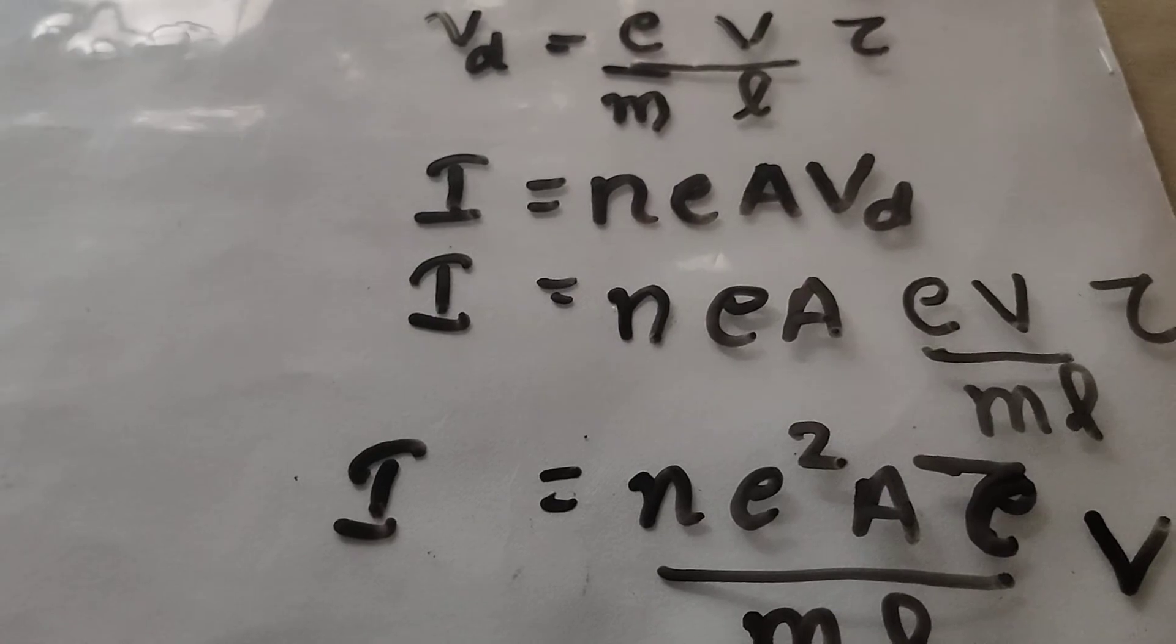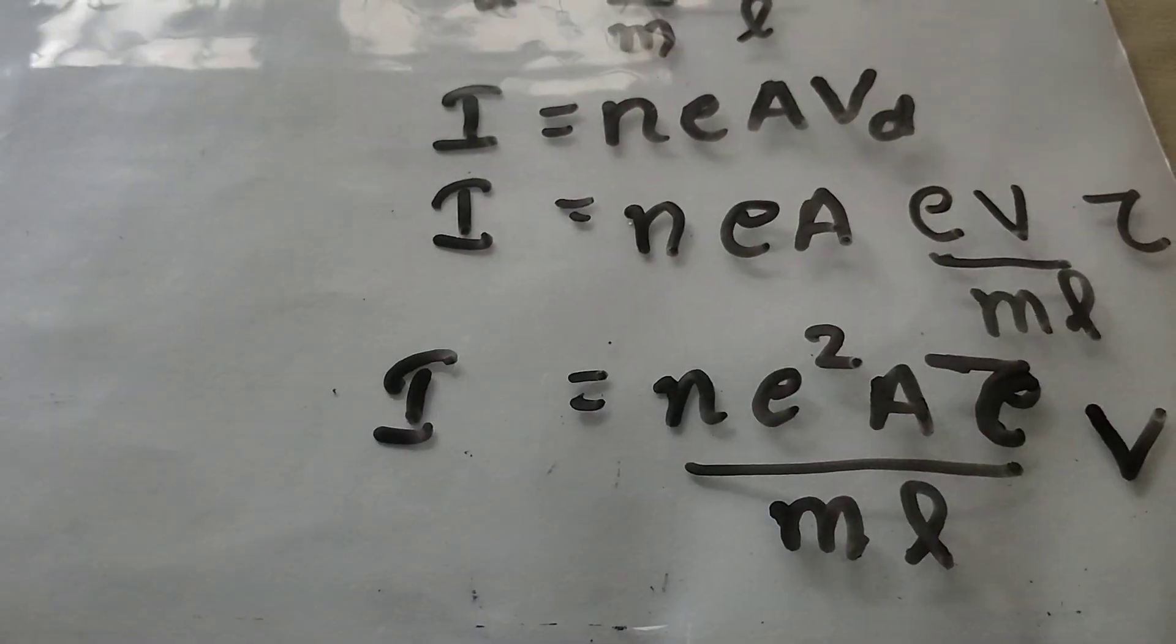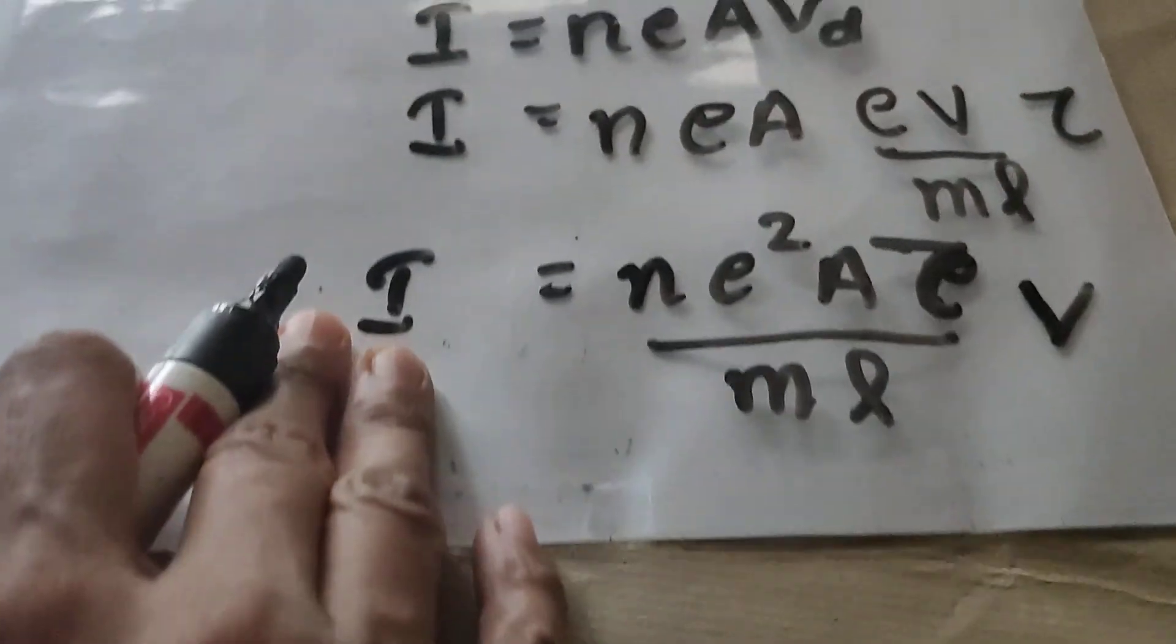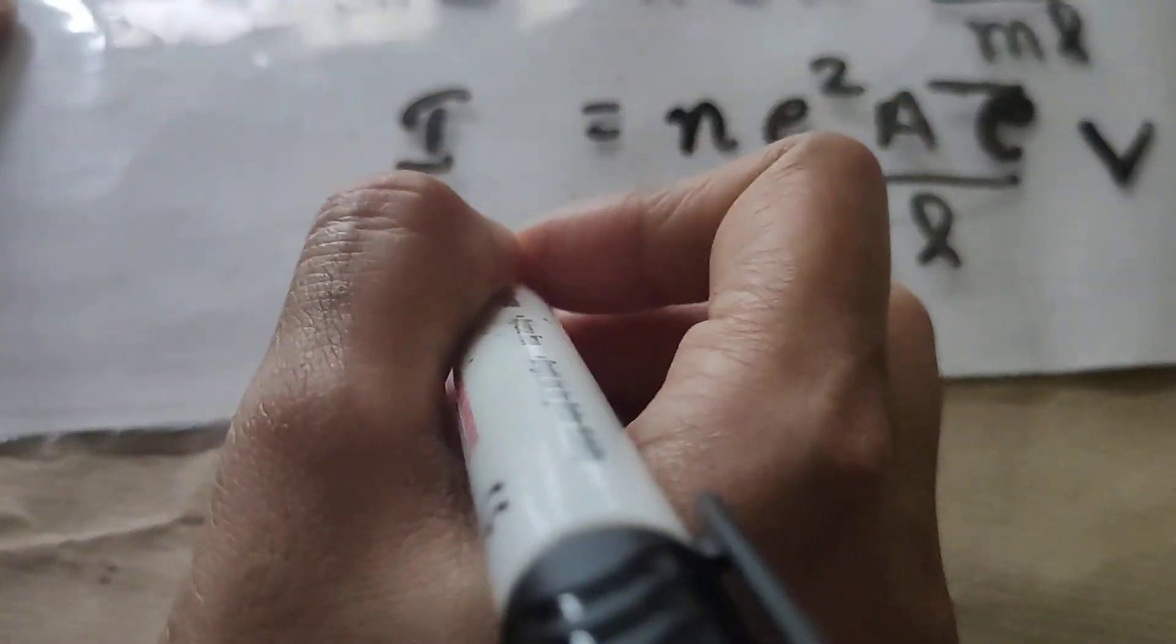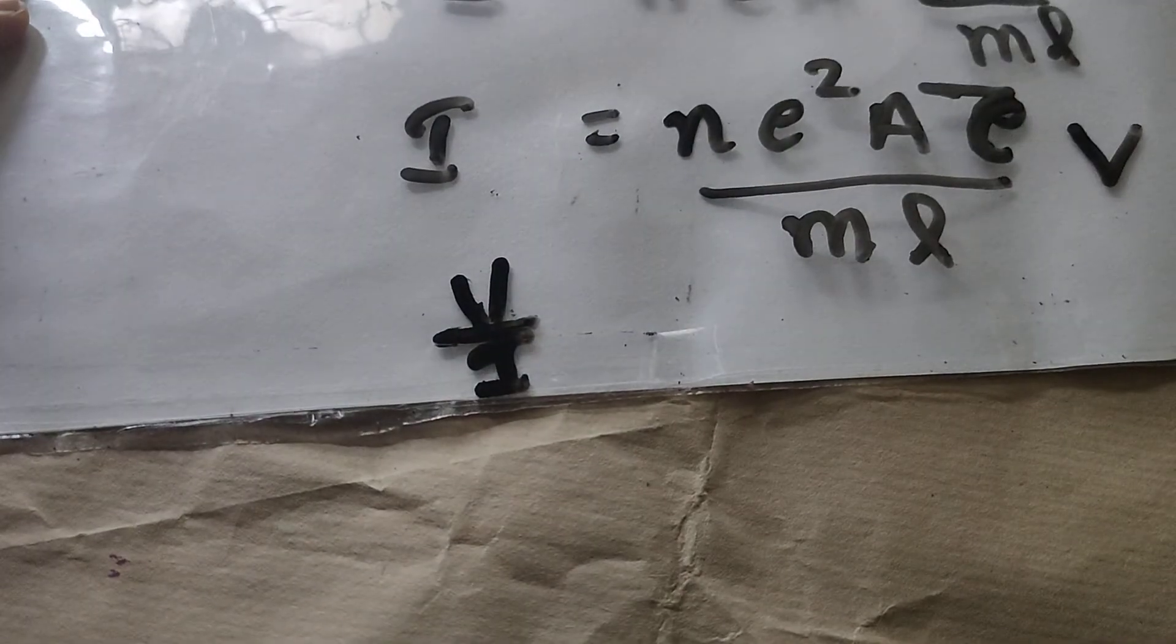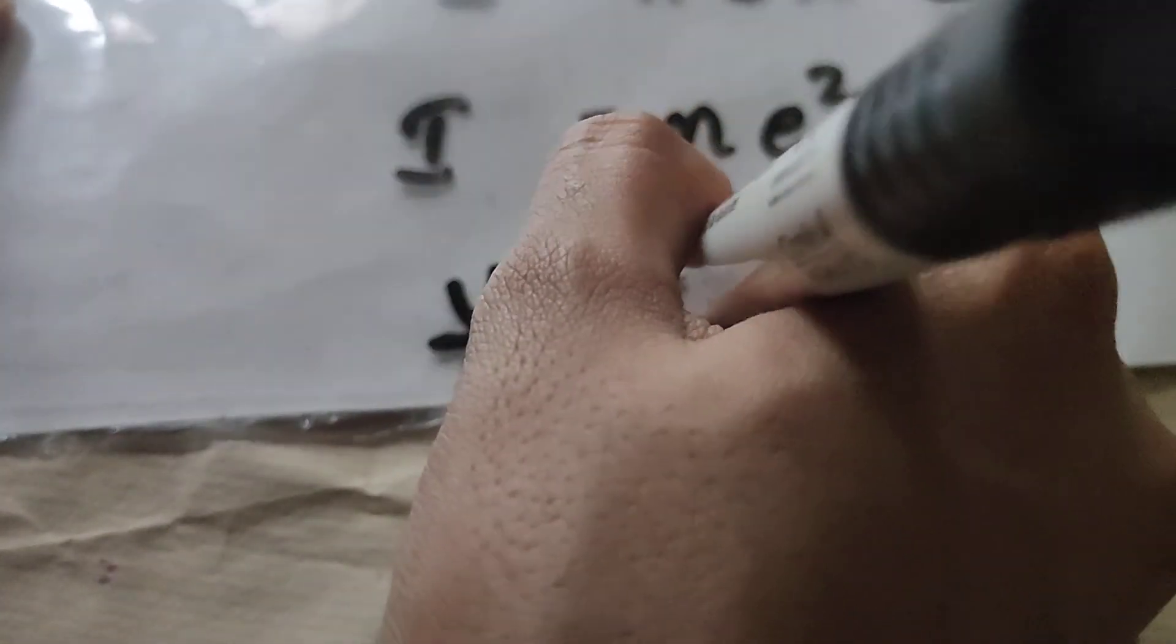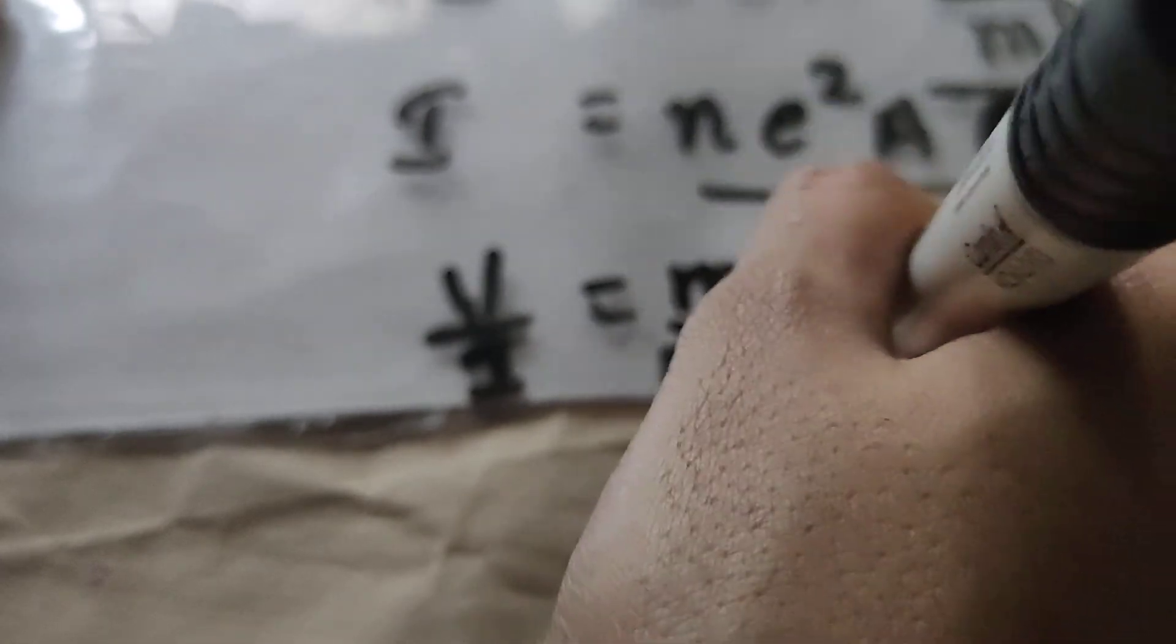Then, here we have I here and V there. So, writing this equation V by I. From this equation, we can calculate V by I. What is V by I? V by I is equal to, taking all other terms to the other side, it will become mL divided by Ne square A into tau.